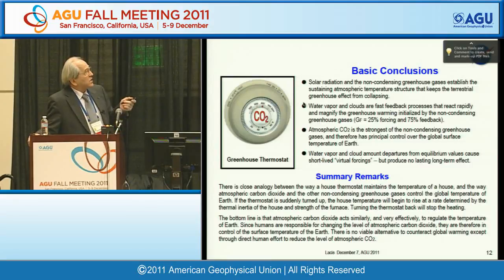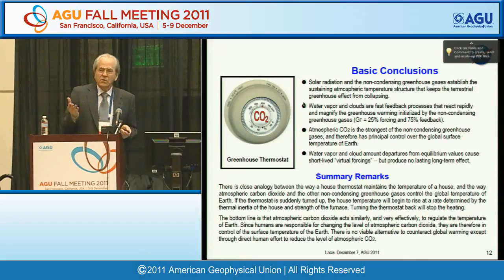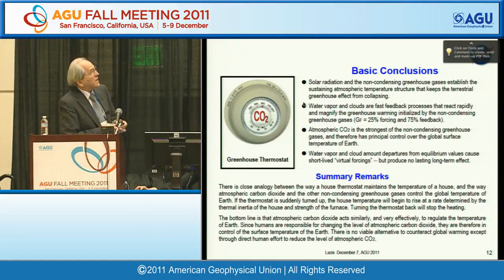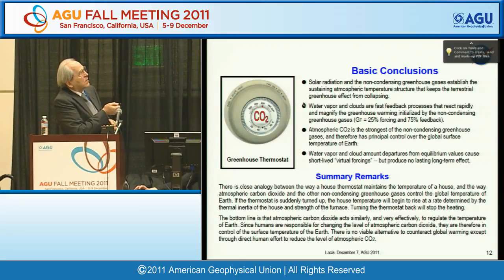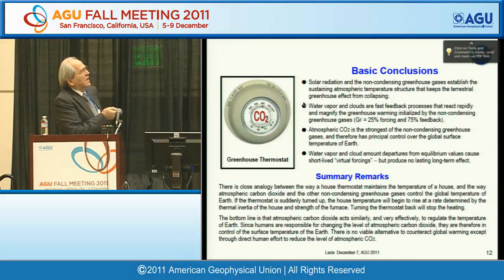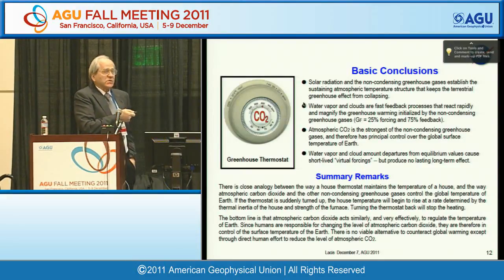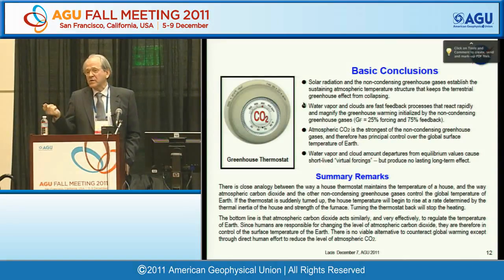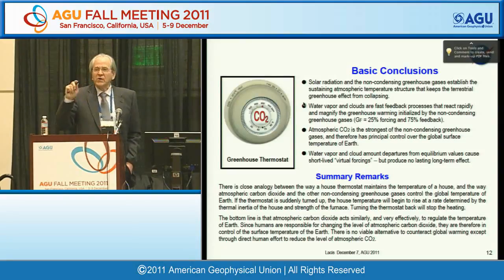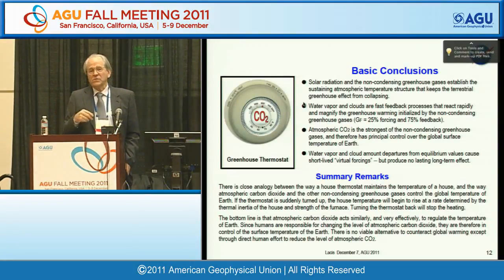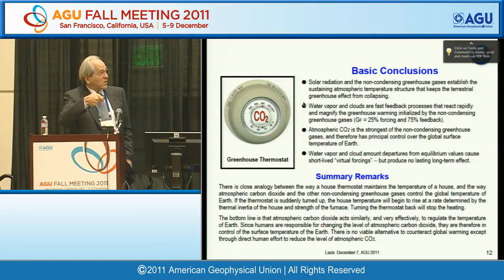The basic conclusions are that solar radiation and the non-condensing greenhouse gases provide the support structure for the atmosphere. Water vapor is a fast feedback that accounts for about 75% of the effect. Changes away from equilibrium occur all the time in the climate system, but they only provide transient virtual forcings which do not contribute to any long-term trend.